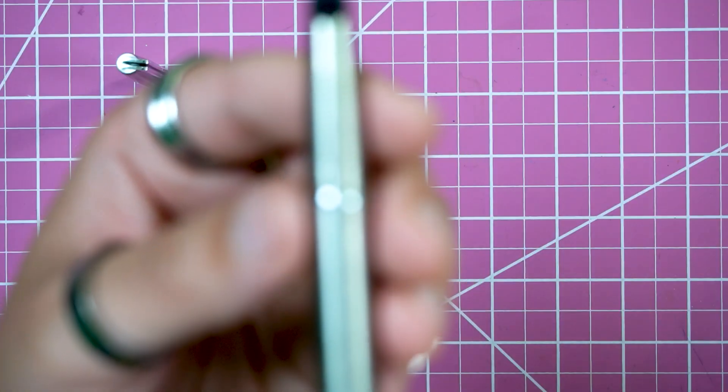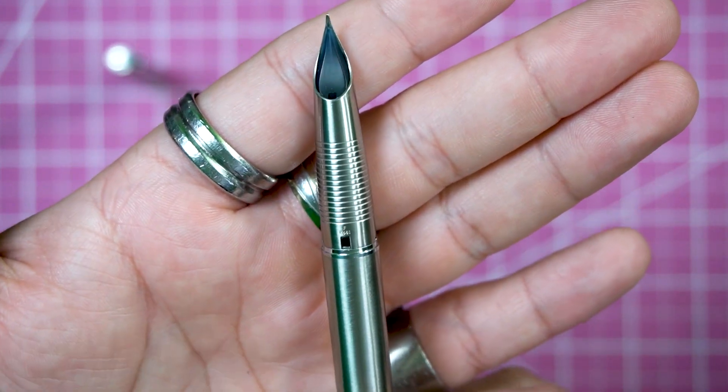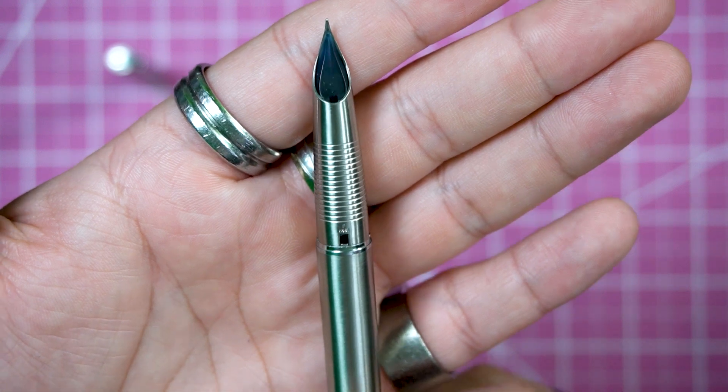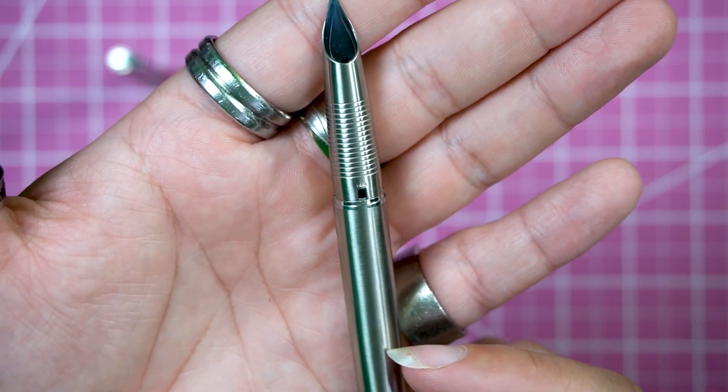Then H681. So H is for the plant that it was made in, the six is for the month, and the eight one is the year. So this pen was made in June of 1981.